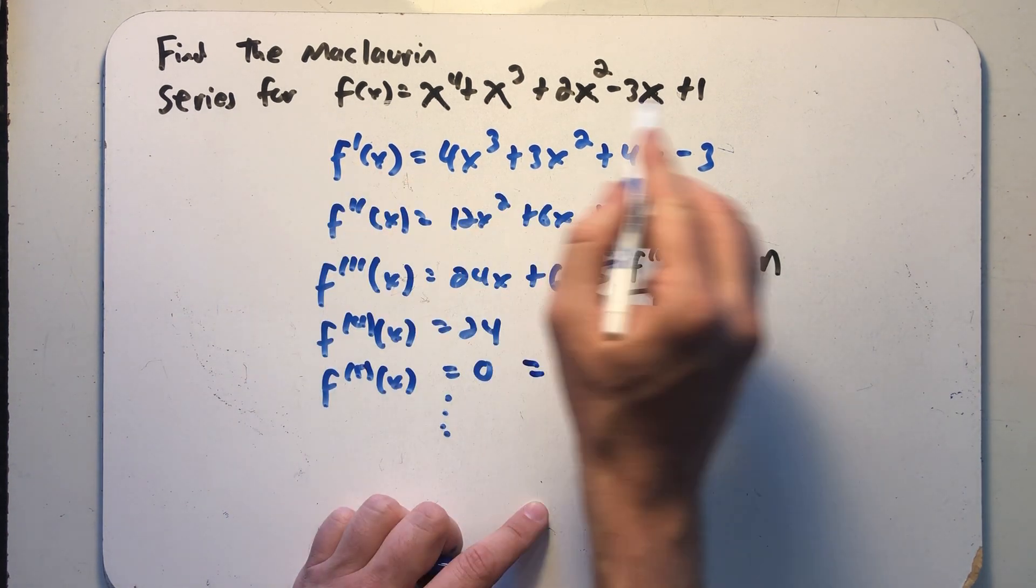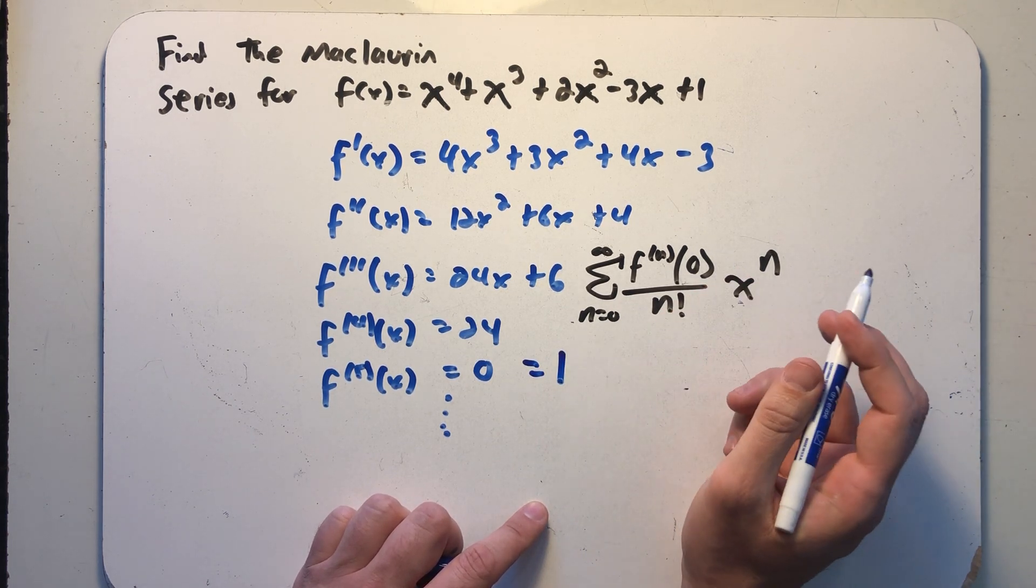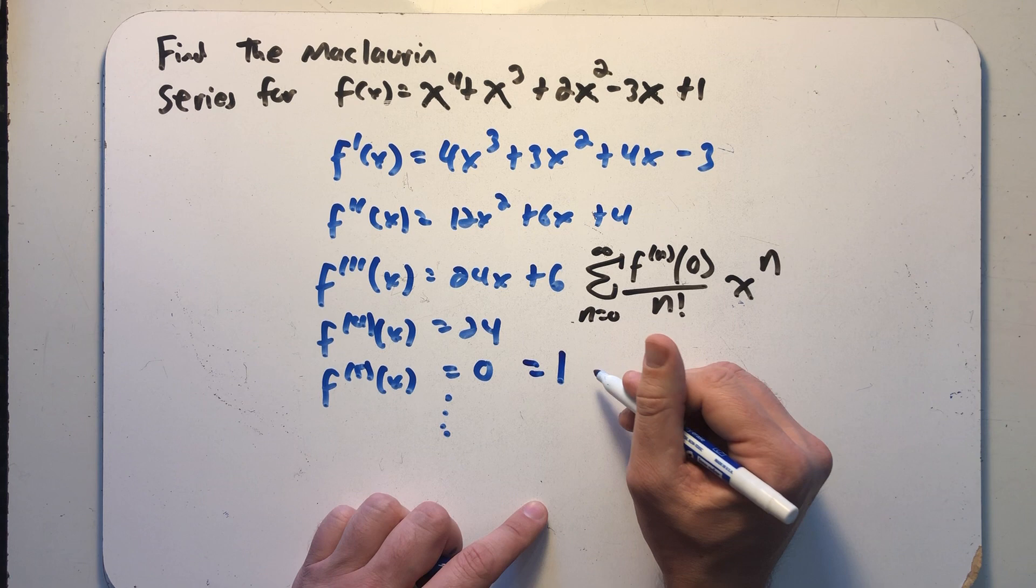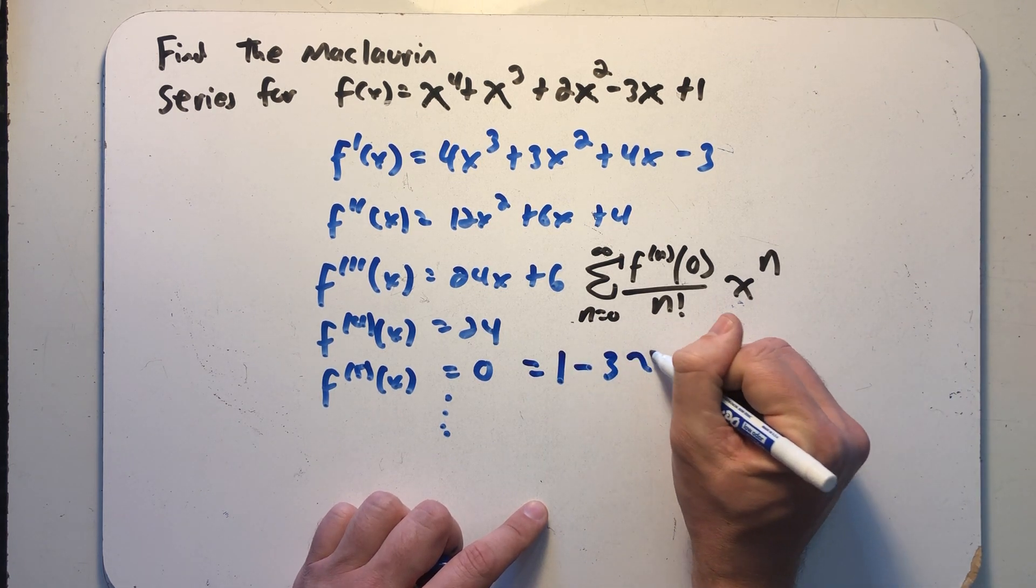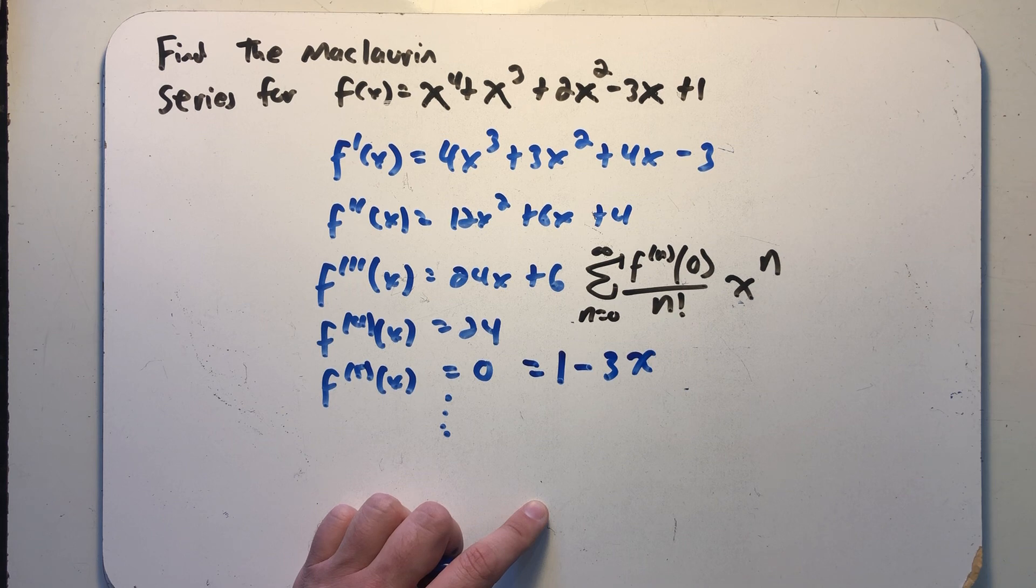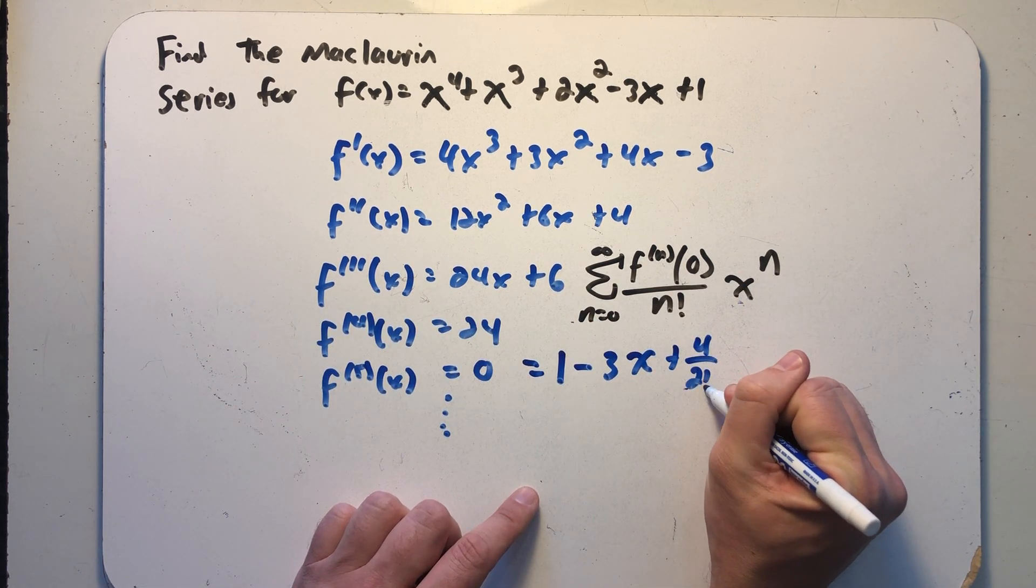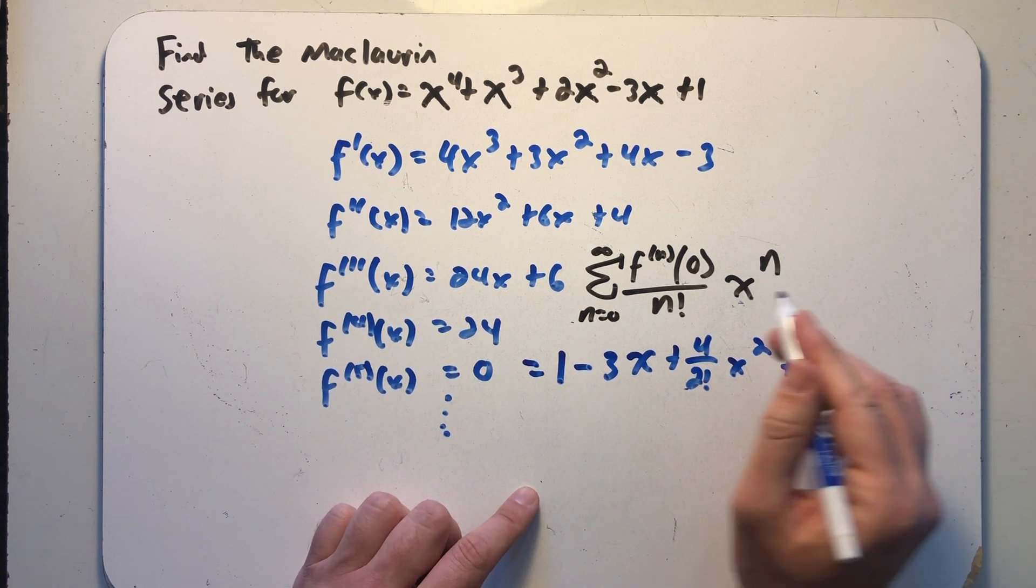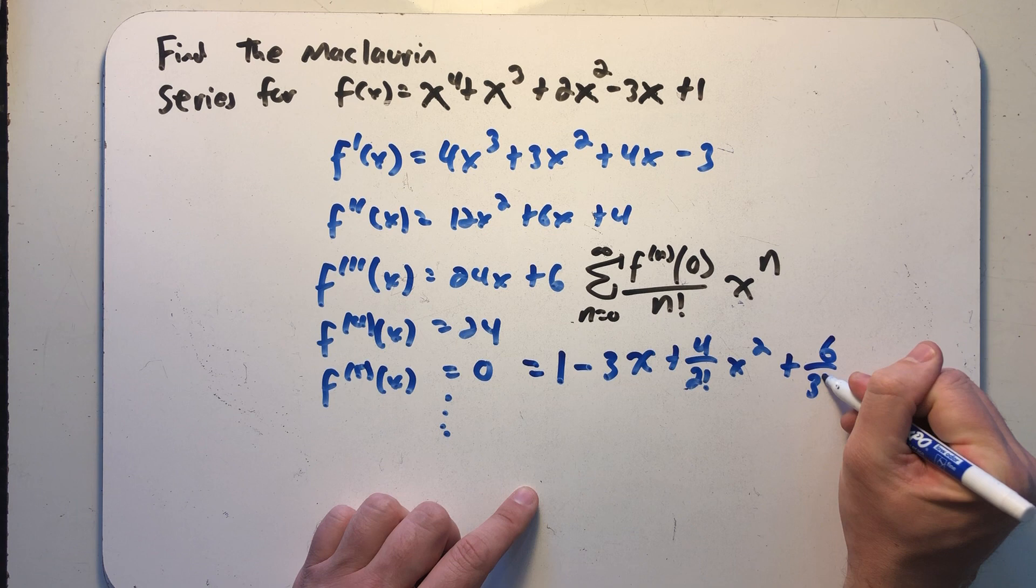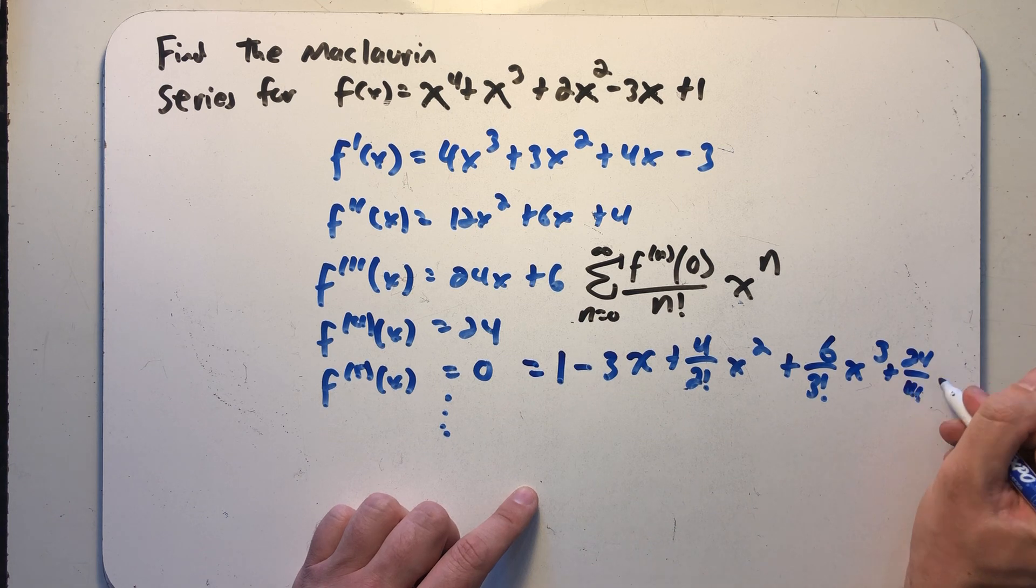Alright, so f(0) is one. And now I need to know f'(0), so actually it works out to be minus three over one factorial times x to the first. Second derivative plus four over two factorial x squared. Third derivative plus six over three factorial times x cubed. Fourth derivative, 24 over four factorial times x to the fourth.